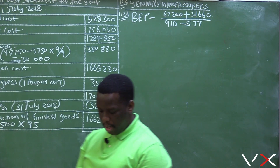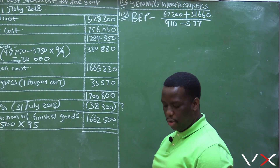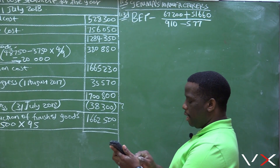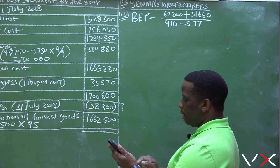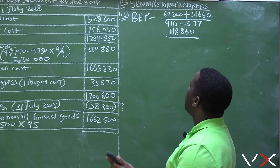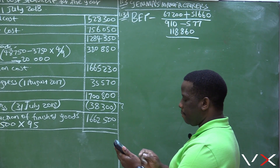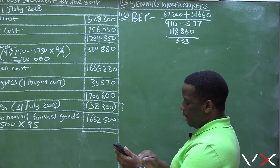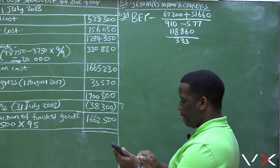All this information is given in information A and B. You must always remember that factory overheads and administration cost are regarded as fixed cost. Direct materials, direct labour cost, and selling and distribution are regarded as variable cost. So $67,200 plus $51,660 equals $118,860.